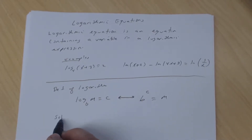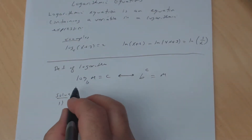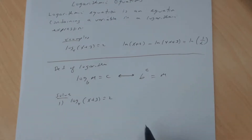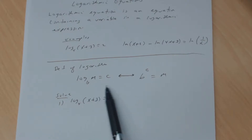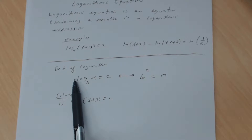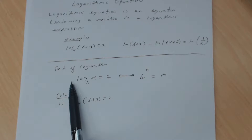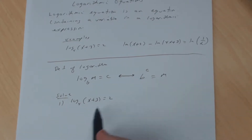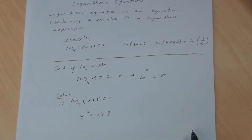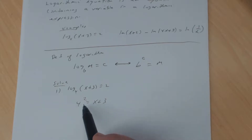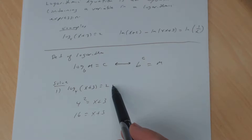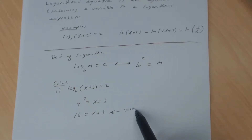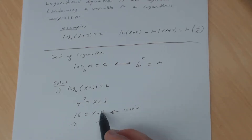Let's solve number one: the log base 4 of x plus 3 equals 2. The log is by itself on one side and the coefficient is 1. You have to have a coefficient of 1 before you can use the definition. Since the coefficient is 1, I can rewrite this in its equivalent exponential form: 4 to the second power equals x plus 3.